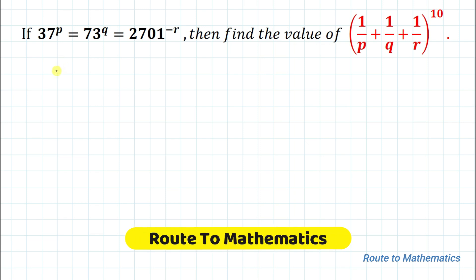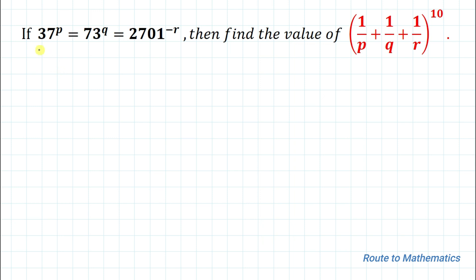Hello everyone, welcome to Root 2 Mathematics. In this video we are going to solve an interesting exponential question. The given question is: if 37 to the power p equals 73 to the power q equals 2701 to the power minus r, then find the value of (1/p + 1/q + 1/r) to the power 10.